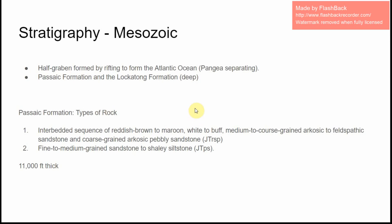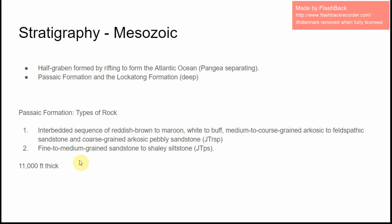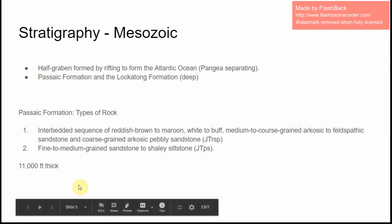In the Passaic formation, which is the exposed type, there are two main types of rock you can find. The most common — represented by all that light blue on the map — is an interbedded sequence of reddish-brown to maroon, white to buff, medium to coarse-grained arkosic to feldspathic sandstone, and coarse-grained arkosic pebbly sandstone. In certain places in the southeast, you can also find fine to medium-grained sandstone to shelly siltstone. There's about 11,000 feet of Mesozoic bedrock in my area.